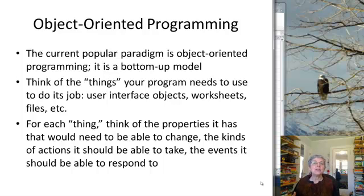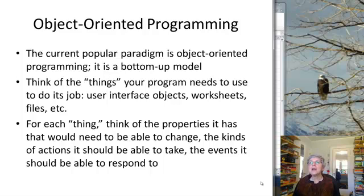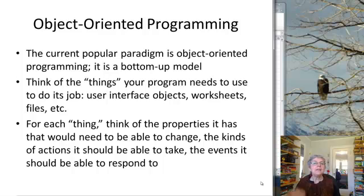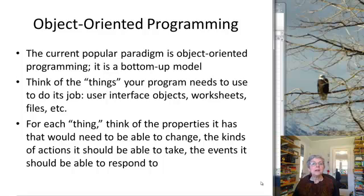In our case, those objects would be things like user forms, option buttons, list boxes, worksheets — the kinds of objects you find in Excel. Then you think about, for each object, what kind of things do you want your program to be able to work with on it? In particular, what properties does it have that we should be able to manipulate? What kinds of tasks can it do — in other words, what jobs belong to this particular object?